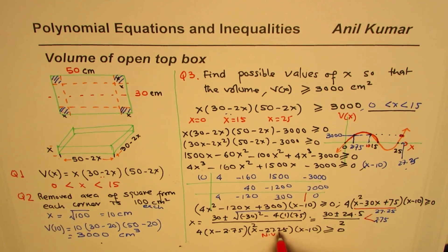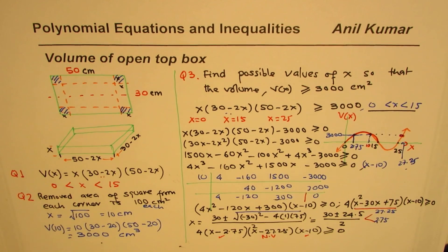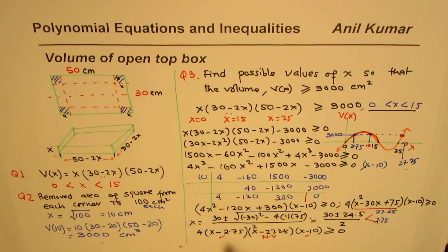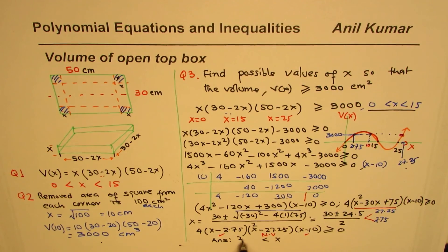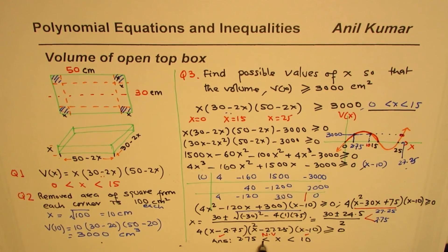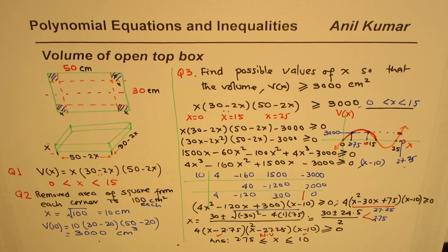Since x = 27.25 is not valid, the solution within the domain is 2.75 ≤ x ≤ 10. The open-top box has volume greater than or equal to 3000 cm³ for x values between approximately 2.75 and 10.